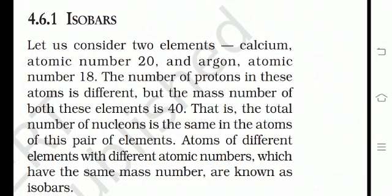Hello students, hi Poorvi, on behalf of Personal Tutor Channel. Today we are going to study isobars from class 9th science, which is very important from the exam point of view and IQ level. So let's start. Consider two elements: calcium, whose atomic number is 20, and argon, whose atomic number is 18. The number of protons in each atom is different, but the mass number of both elements is 40.